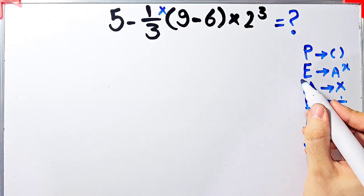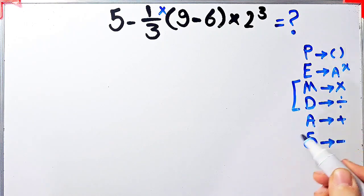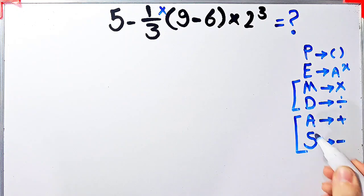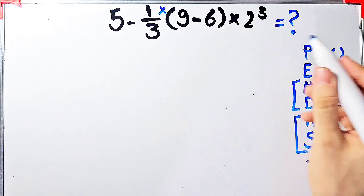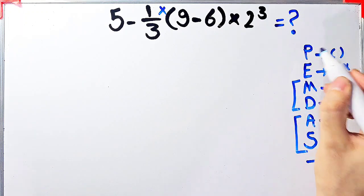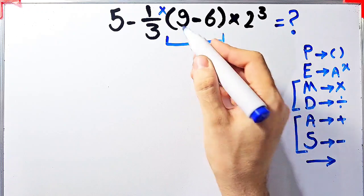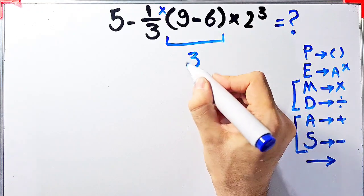Multiplication and division have the same level of priority. Also, addition and subtraction have the same level of priority, and when we have both in an expression, we start from the left and simplify the question. According to the PEMDAS rule, first we simplify the parentheses. Inside these parentheses, we have 9 minus 6. 9 minus 6 equals 3.